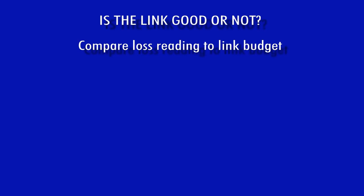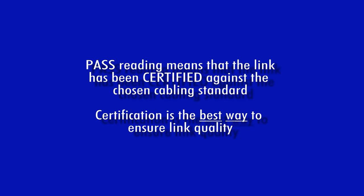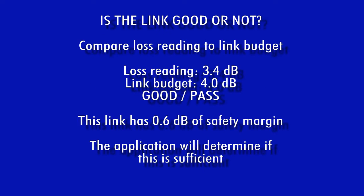Once you know the loss reading and the link budget, there are two possible results: good — the loss reading is within the link budget, which can also mean pass — or not good, where the loss reading exceeds the link budget, which means fail. When you get a pass reading, you can say that the fiber link has been certified using the chosen standard. Certification is the best way to assure the quality of the fiber link installation. In addition to determining pass-fail, you can also see how close you are to the threshold, giving you assurance that the fiber link is operating with enough safety margin to overcome slight changes in the environment or small bits of dust on fiber connectors.